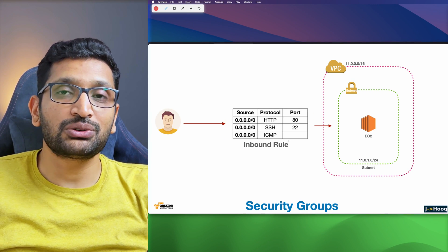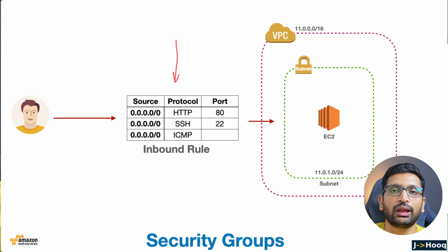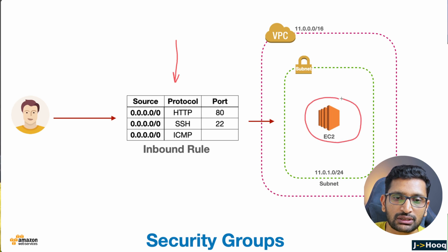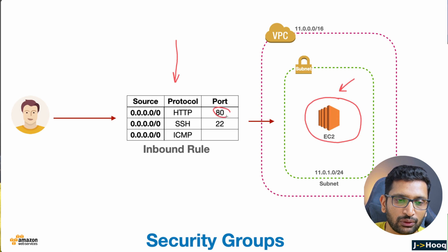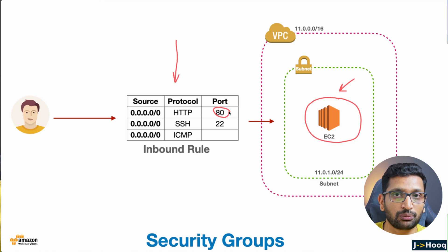Let's take a look at a typical inbound security group. Here on the screen you can see an inbound rule which I have created. This security group inbound rule is responsible for any incoming request. On the right hand side you can see this is our EC2 instance where our applications are running, and that application is running on port 80 which I have specified here. This is the rule created for incoming requests, applicable on port 80.